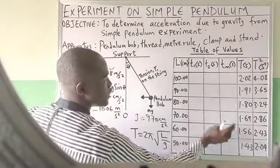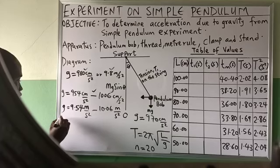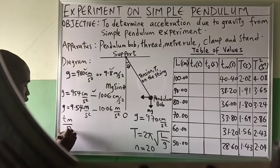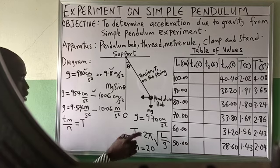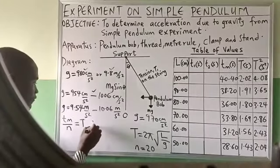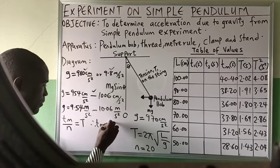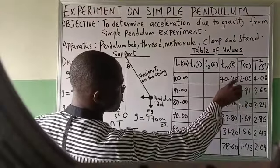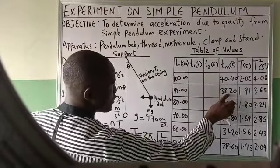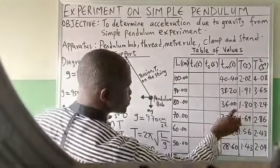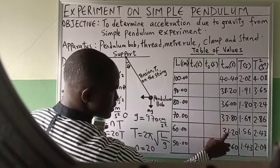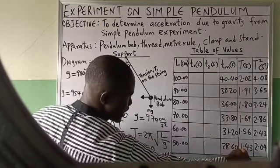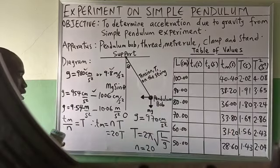Recall that mean time divided by number of oscillations equals the period. The number of oscillations given is 20. Therefore mean time equals 20 times the period. So 20 × 2.02 = 40.40; 20 × 1.91 = 38.20; 20 × 1.80 = 36.00; and so on for each T value, giving 33.8 and 31.3 for the remaining rows.